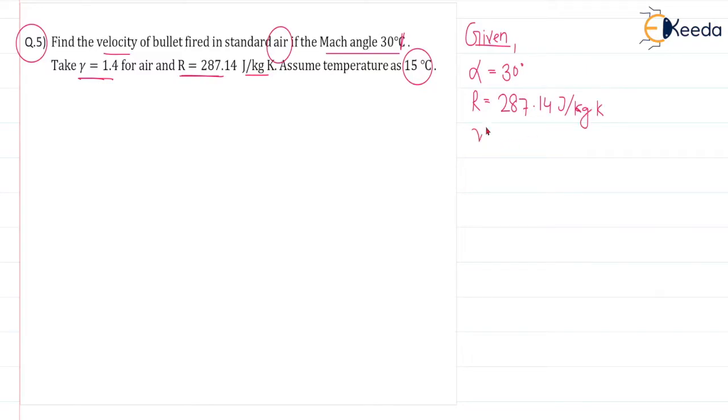Gamma is given, gamma is equal to 1.4 and temperature also given T equal to 15 degrees centigrade. You can convert to Kelvin, 15 plus 273, that is 288 Kelvin.